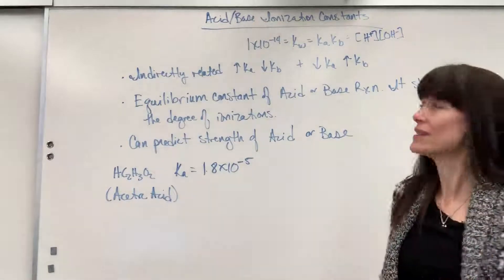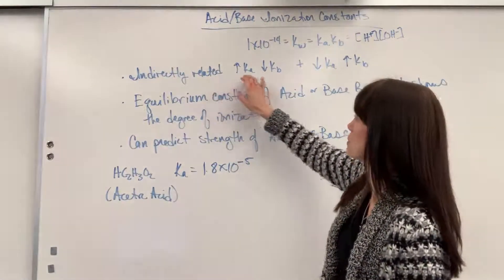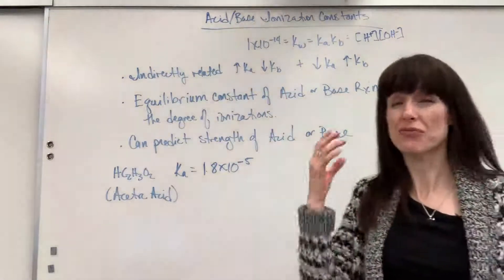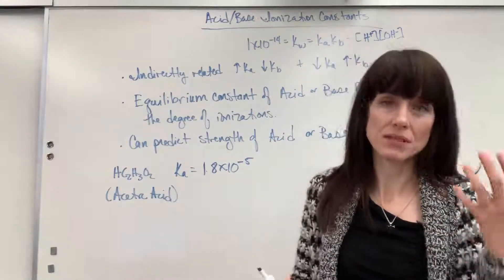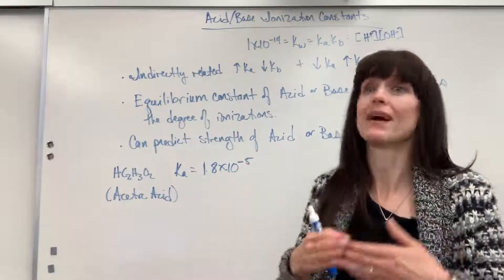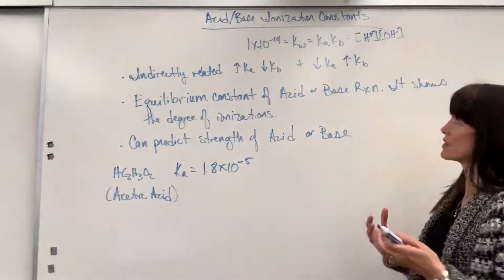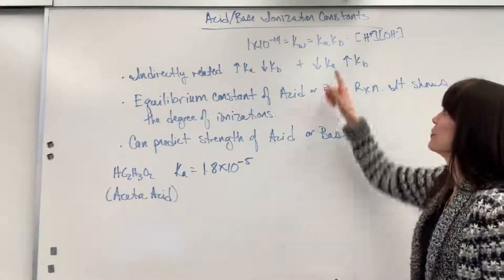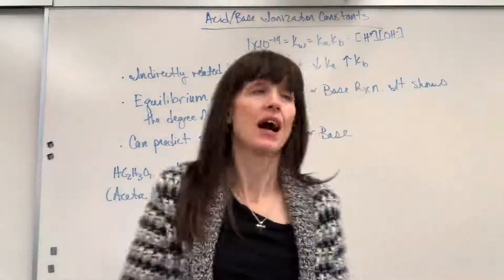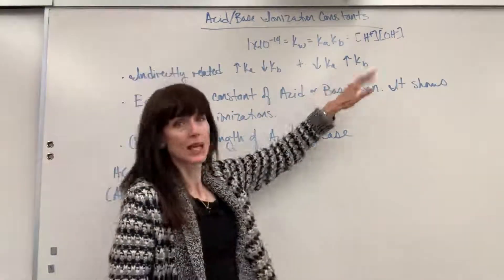So, what you'll notice is that there's an indirect relationship between Ka and Kb. If you have a really large Ka, you're going to have a smaller Kb, because when you multiply them, they have to equal 1 times 10 to the minus 14. And vice versa, this statement's equally true. If you have a small Ka, you're going to have a very large Kb.